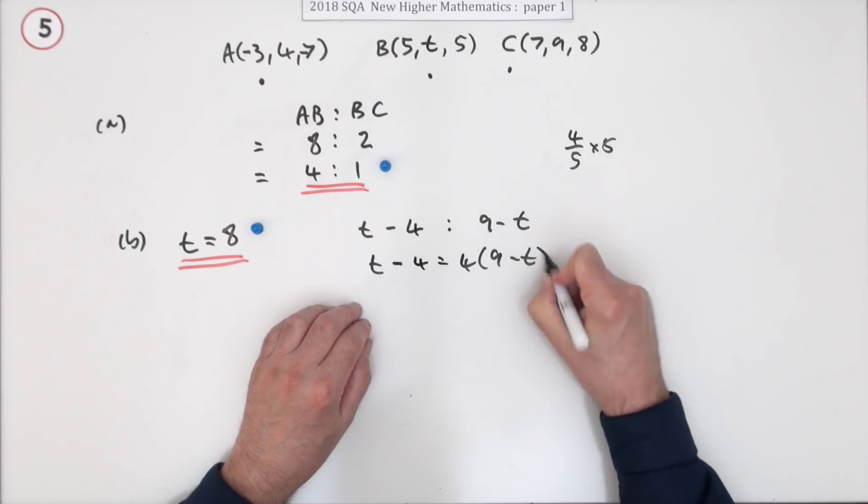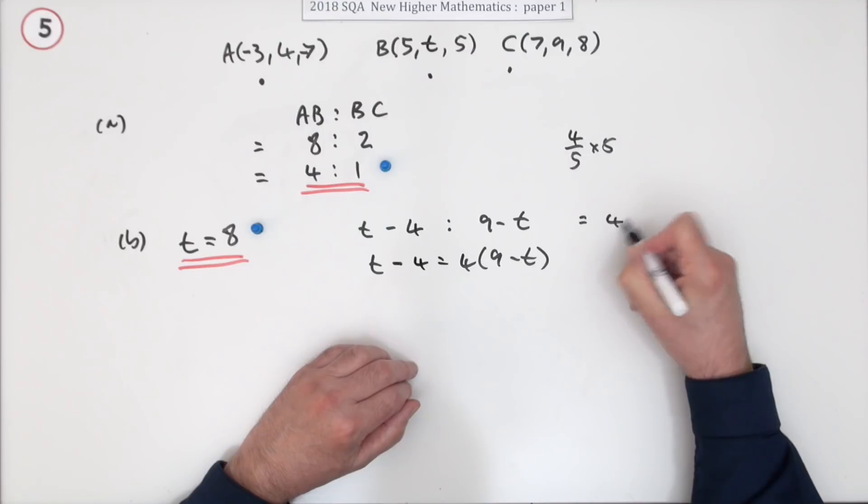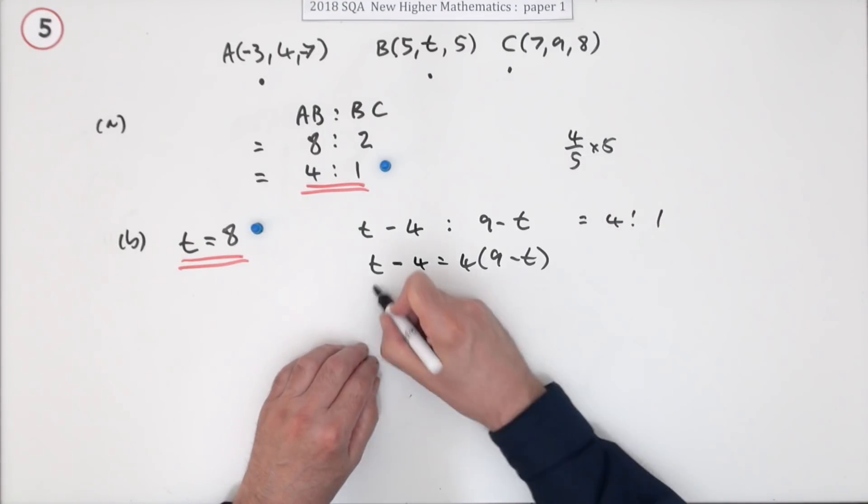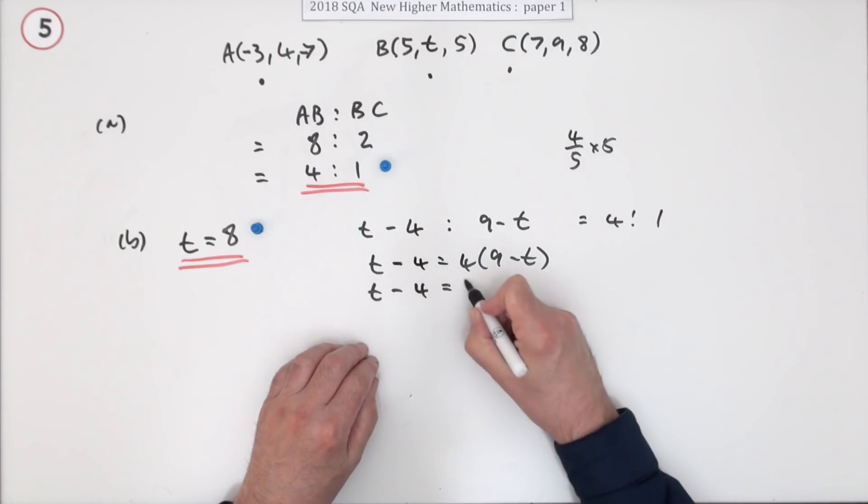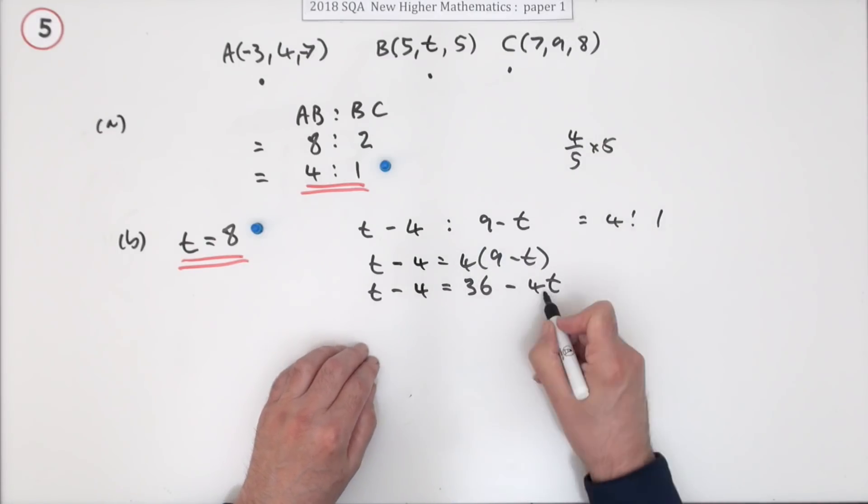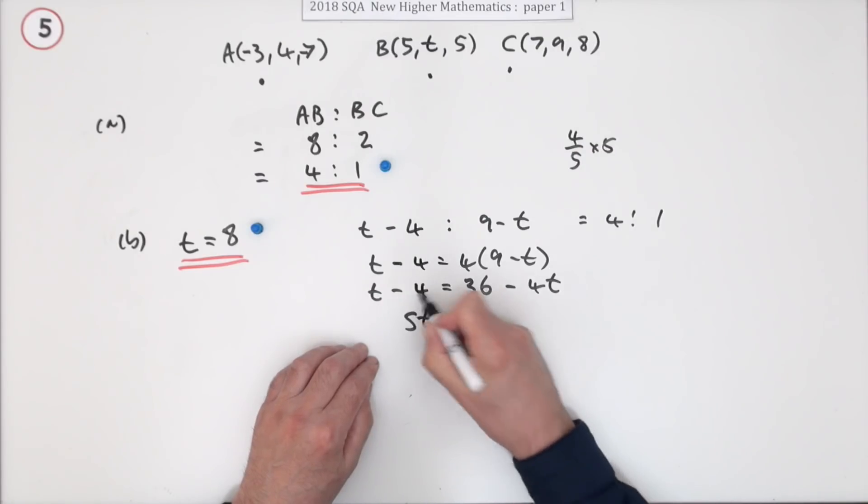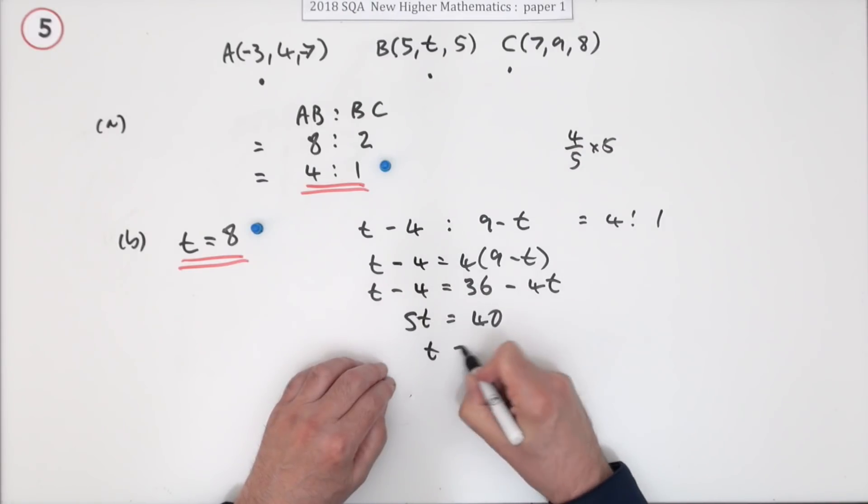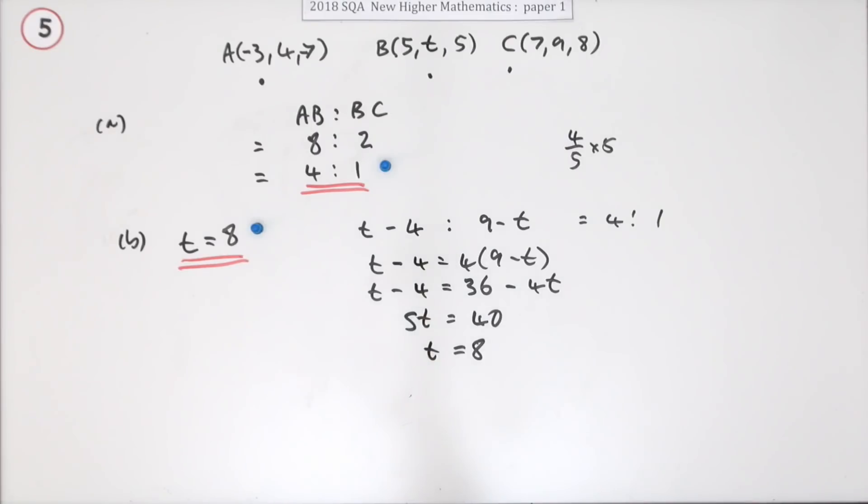Multiplying that out, T minus four is 36 minus 4T. Bringing that across makes 5T. Bring the four across makes it 40, so T equals eight as before. But you could just do it in your head.